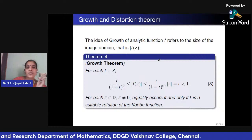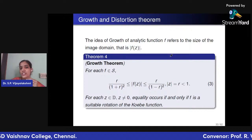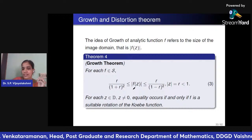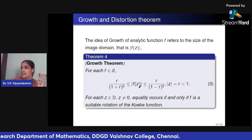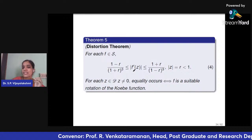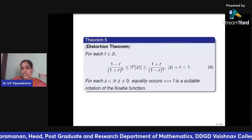The growth theorem refers to the size of the image domain f(D), and the distortion theorem concerns |f'(z)|. If f ∈ S, then r/(1+r)² ≤ |f(z)| ≤ r/(1−r)² and (1−r)/(1+r)³ ≤ |f'(z)| ≤ (1+r)/(1−r)³, with equality only for rotations of the Koebe function.